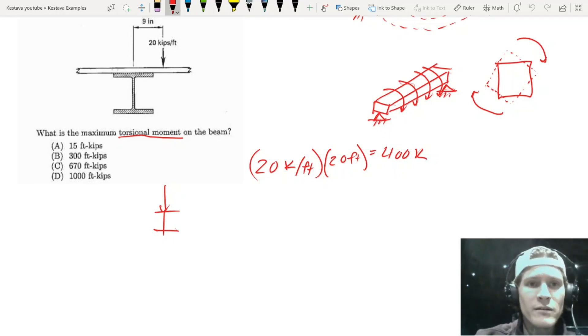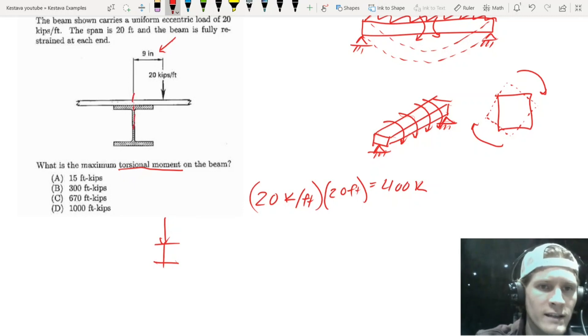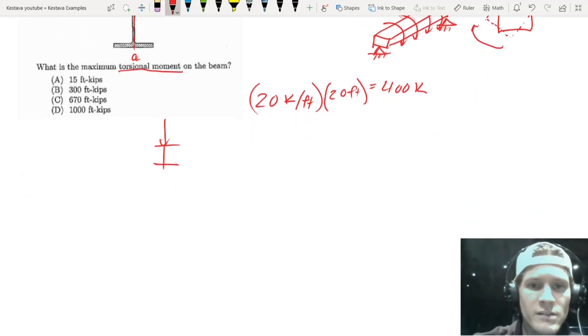But what you have here above, as shown, you have an eccentricity of nine inches, and that's just backed, again, along to the center line of your beam. So nine inches is going to be our length, which generates our torsional effects.